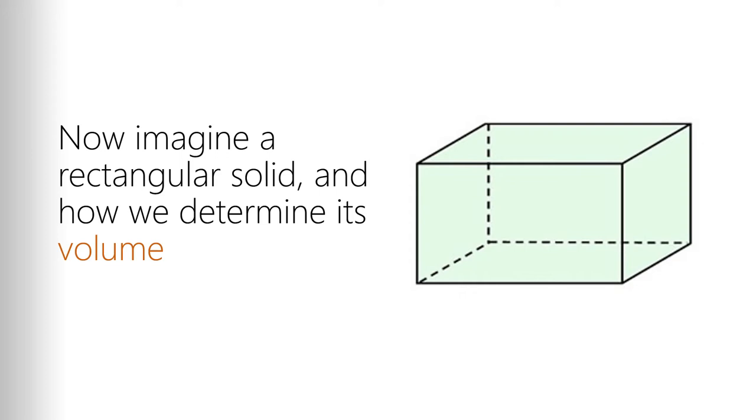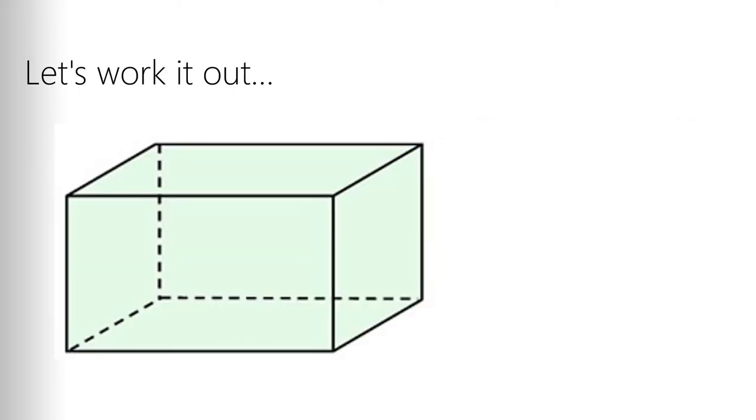We know that we can determine the volume of this rectangular solid by taking the length times the width times the height. So I just need three measurements to get the volume. Well, let's try that.